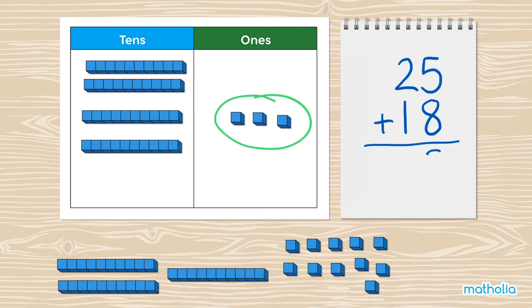Write 3 in the ones column and write a 1 in the tens column to show the 10 block that we put there.